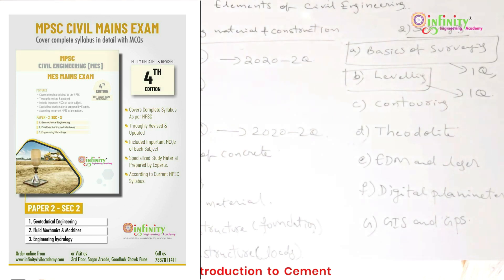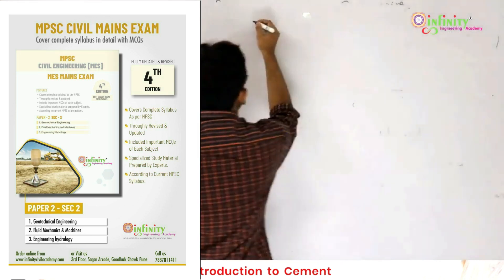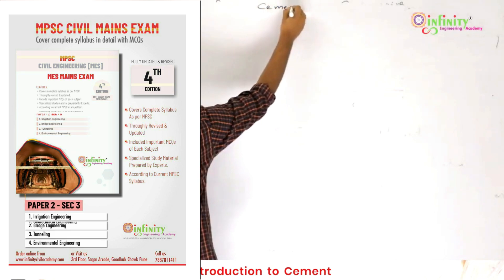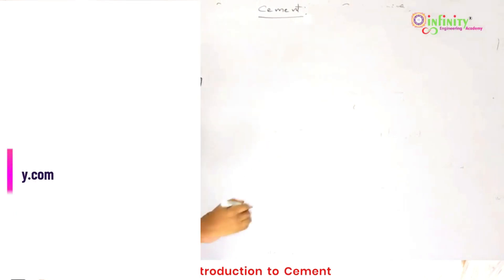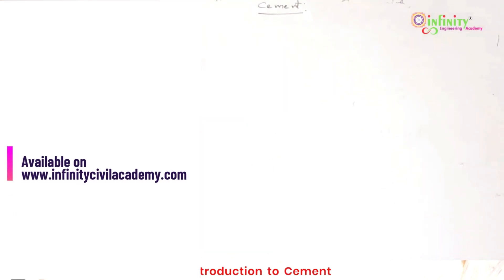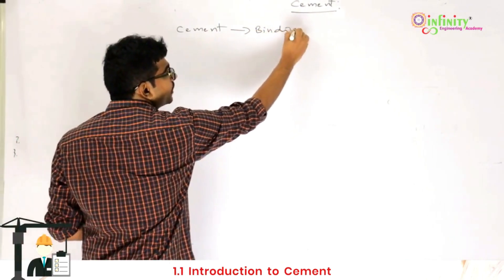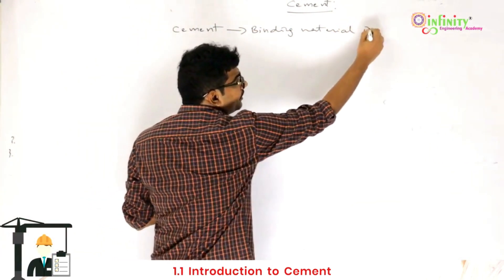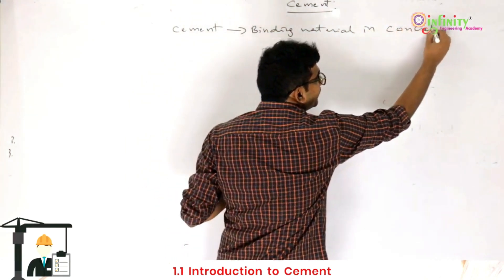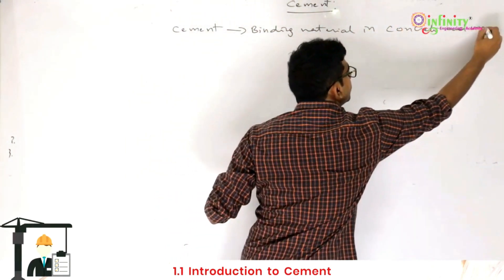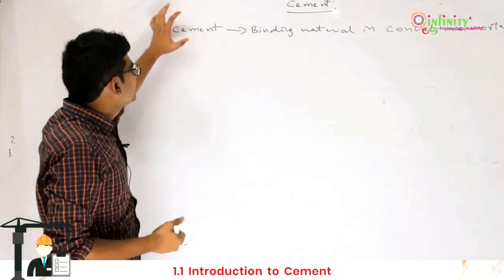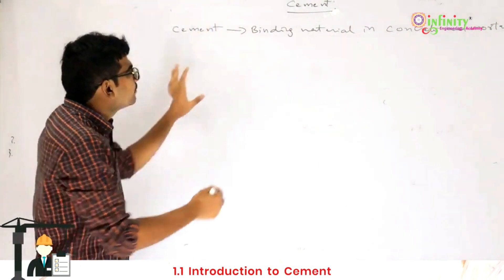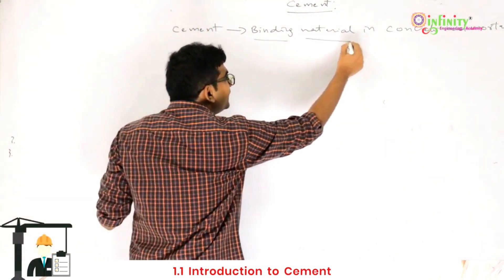The first topic we are going to discuss is cement. What is the role of cement in construction? Cement is used as a binding material in concrete and mortar. Concrete and mortar consist of different materials, and one of them is cement. The purpose of cement is that it acts as the binding material.